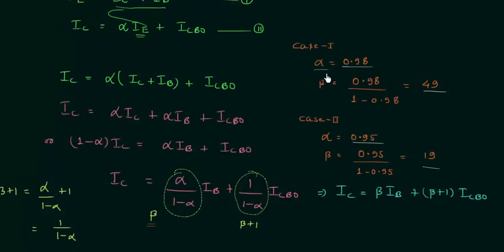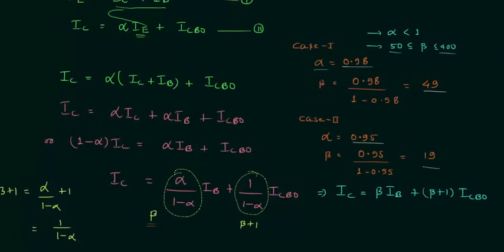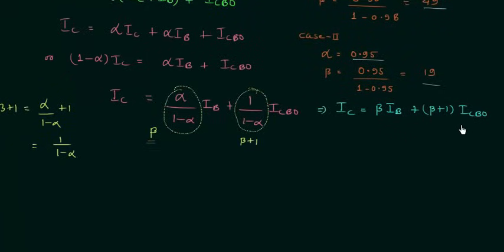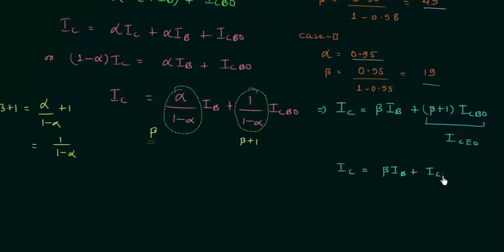Alpha is the amplification factor in common base configuration and it is less than 1. Beta is in the order of 100 and the range is from 50 to 400. Moving back to the equation, (beta plus 1) times ICBO is represented as ICEO — the reverse saturation current in common emitter configuration. So we can write IC equal to beta times IB plus ICEO.